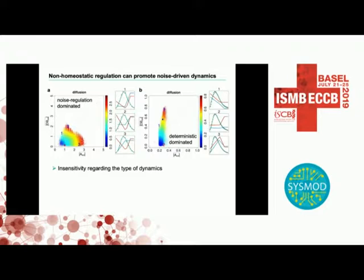This phase space is characterized by the average absolute value of the deterministic term and the regulated noise term. You also see here the difference between the assumption of 15 and 60 molecules. In this case, the noise dominated term is the upper left — noise dominated — and the lower right is deterministically dominated. It's quite different.